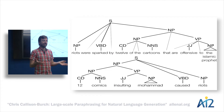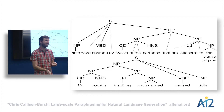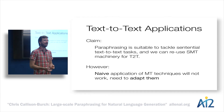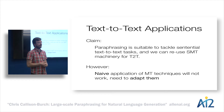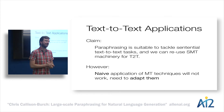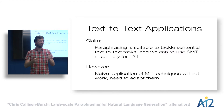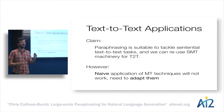That's the general notion of how we apply these rules to achieve effects like compression. My claim is that this paraphrasing mechanism is suitable for quite a range of text-to-text generation tasks, and that we can reuse a lot of statistical machine translation machinery — with the caveat that we shouldn't just naively apply that machinery; instead we need to do some adaptation in order to get it to work.